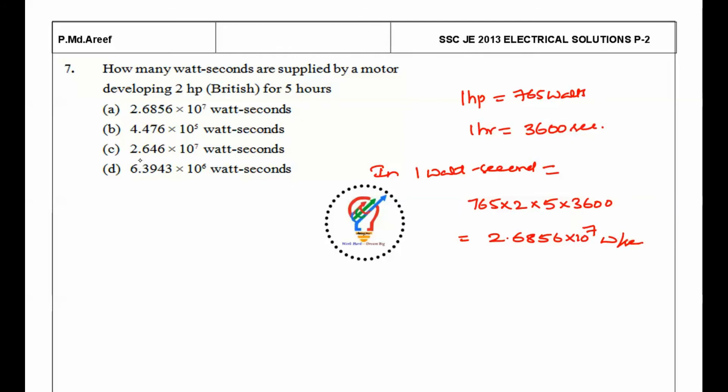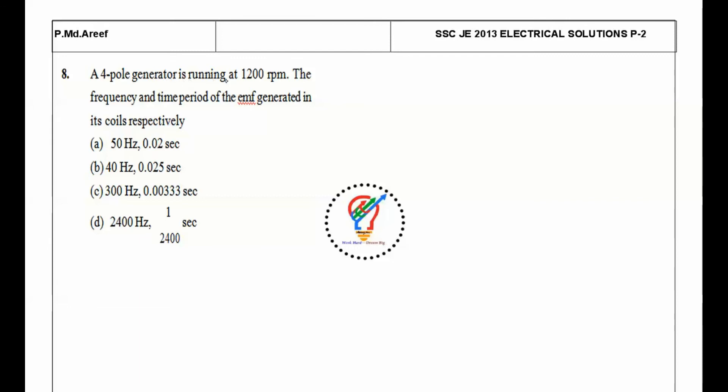Next question: a 4-pole generator is running at 1200 rpm. The frequency and time period of the EMF generated in the coils respectively. For a 4-pole generator, NS equals 120F by P. Here we want frequency, so F equals NS times P divided by 120.